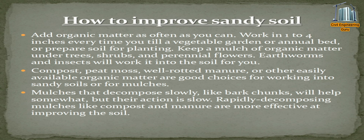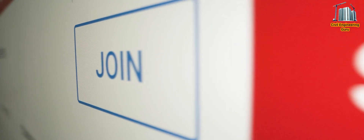Add organic matter as often as you can — work in one to four inches every time you till a vegetable garden or annual bed, or prepare soil for planting. Keep a mulch of organic matter under trees, shrubs, and perennial flowers; earthworms and insects will work it into the soil for you. Compost, peat moss, and well-rotted manure are good choices. Rapidly decomposing mulches like compost and manure are more effective at improving soil than slow ones like bark chunks.